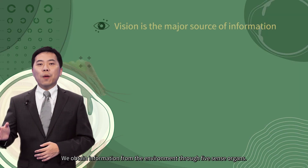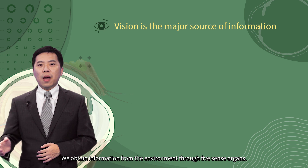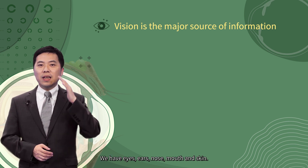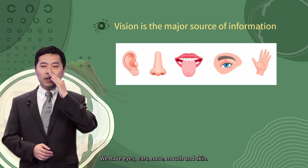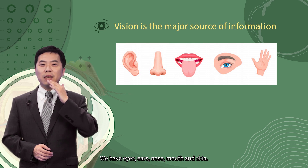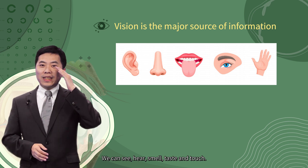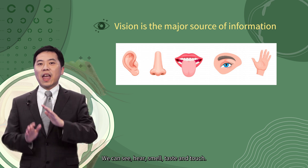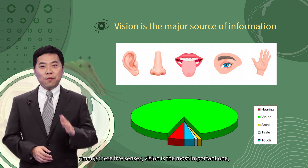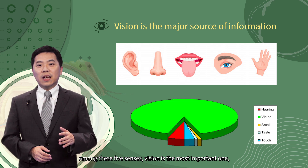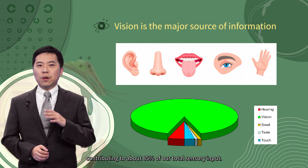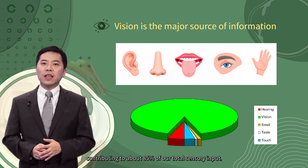We obtain information from the environment through five sense organs: eyes, ears, nose, mouth, and skin — allowing us to see, hear, smell, taste, and touch. Among these five senses, vision is the most important one, contributing to about 85% of our total sensory input.